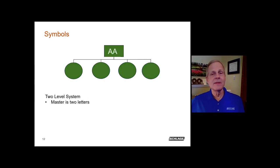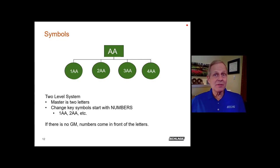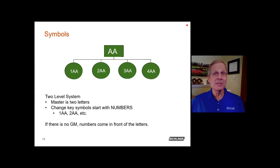In a two-level system, the master key still uses double letters that are both the same. However, the change key numbers come in front of the letters rather than behind them — this indicates that there is no higher-level key. It signals that there are only two levels: a master key level and a change key level. You might find this arrangement for a small retail store or a very simple apartment with few doors.